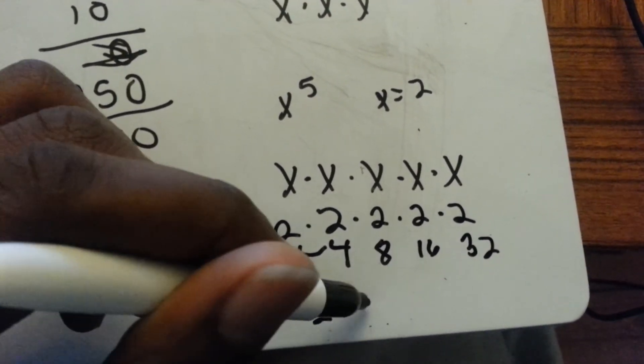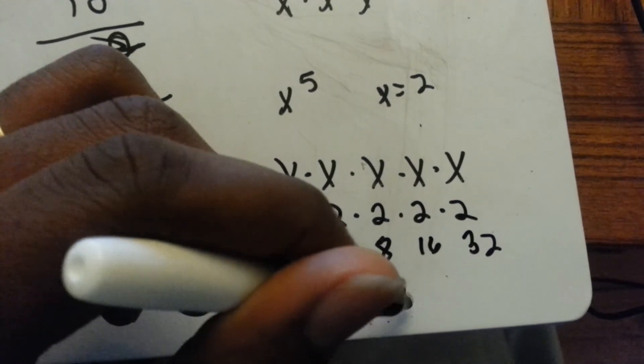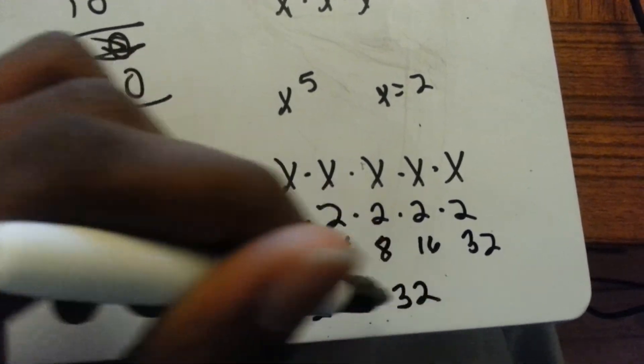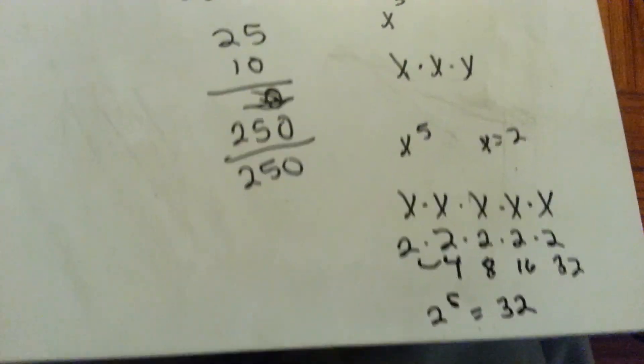2 to the fifth power equals 32. And there we go.